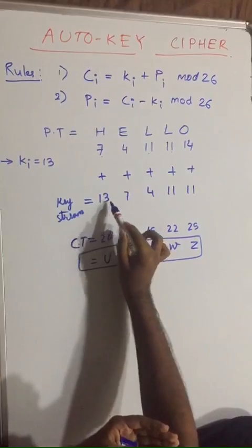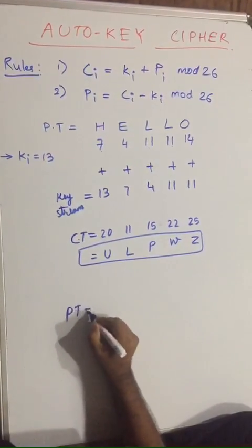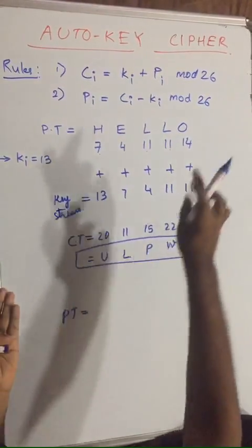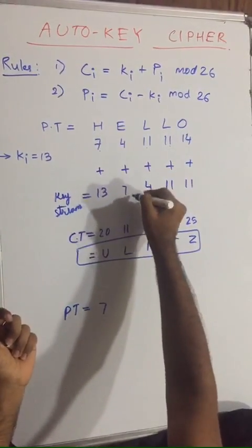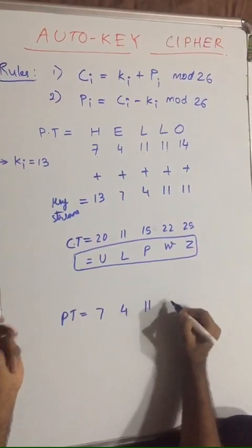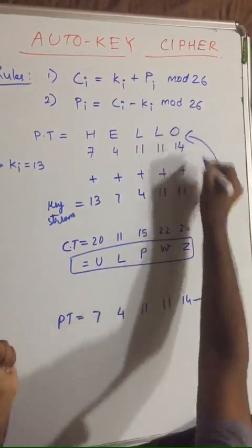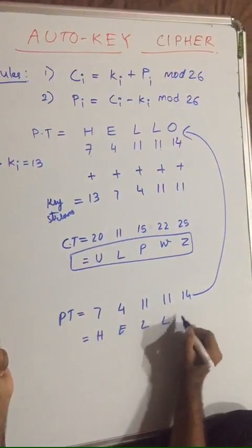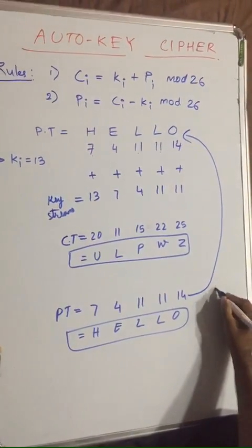For plaintext, just subtract: 20 - 13 which would be equal to 7 mod 26 = 7 again. 11 - 7 = 4 mod 26 = 4. Similarly you would be getting 11, 11, and 14, which you can relate over here. So again our plaintext is HELLO.